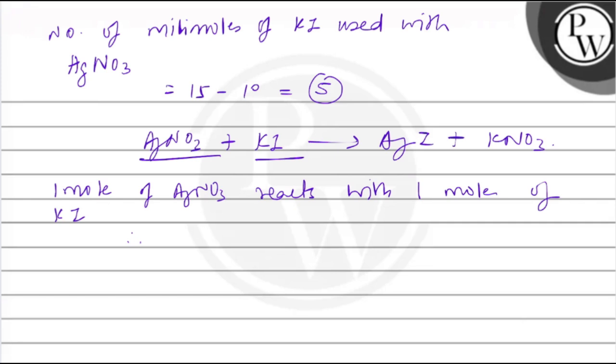Therefore, number of millimoles of AgNO3 equals to 5. So we will calculate weight of AgNO3 that will be 5 × 10^-3 × 170 gram. As we know AgNO3 has a molar mass of 170 gram. It comes out to be 0.85 gram.